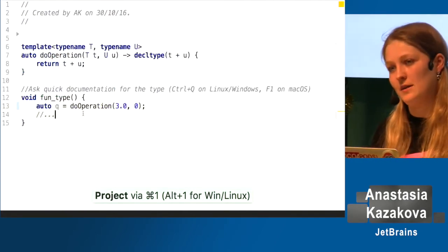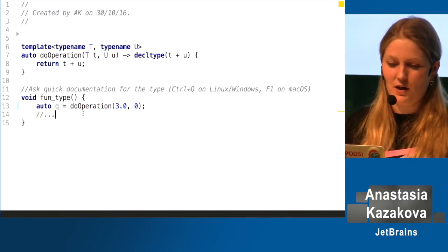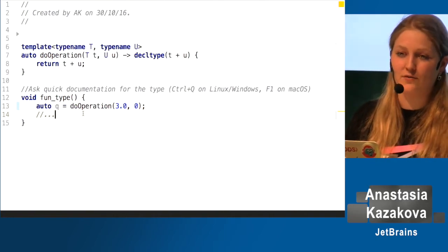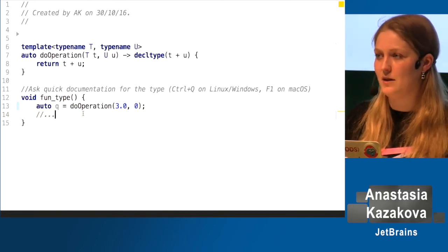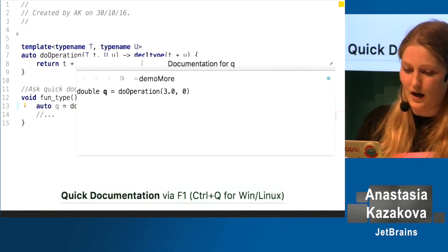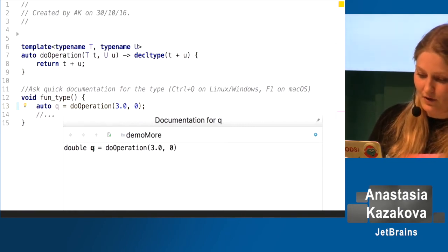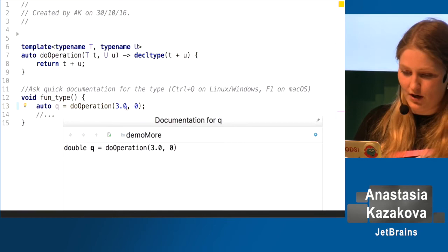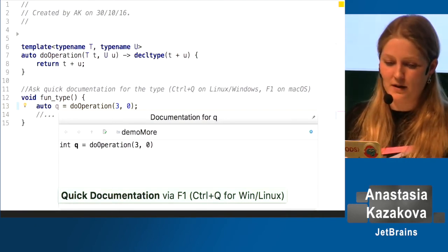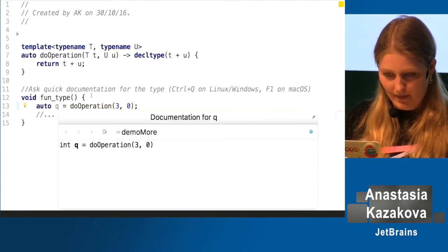CLion infers types in the background — including auto-deduced types and template types. If I call a quick documentation popup on an auto variable, I can see the actual inferred type — for example, it will show a variable is double. If I change the values to integers, it updates accordingly. So the IDE actually shows you the proper inferred type.